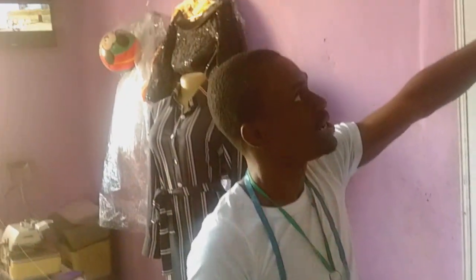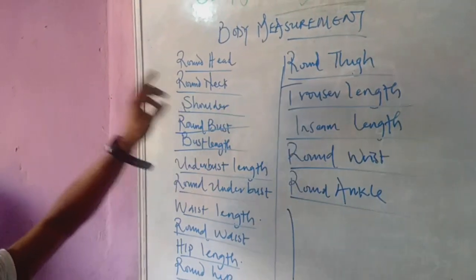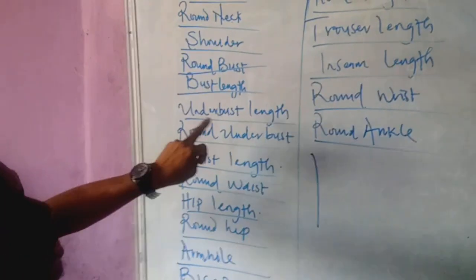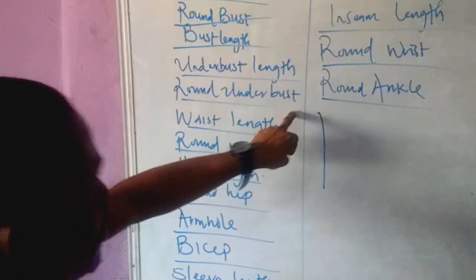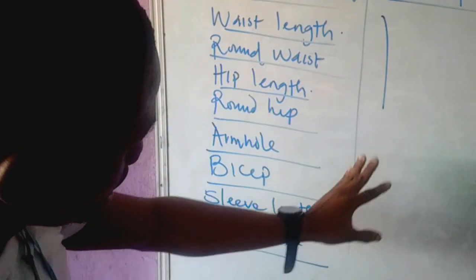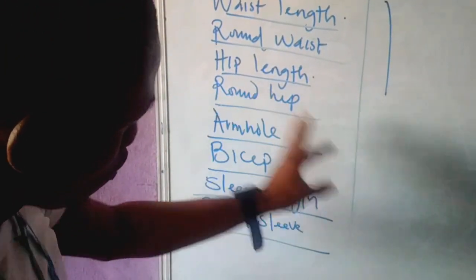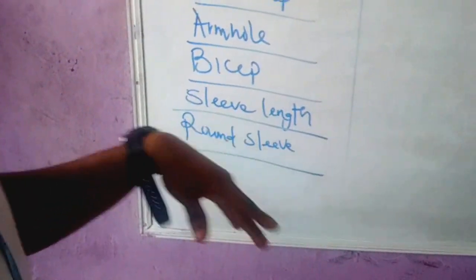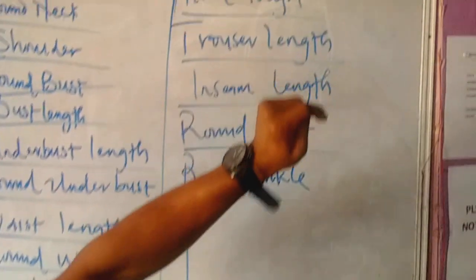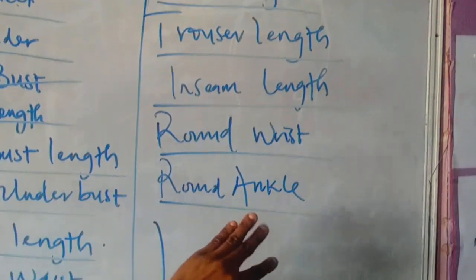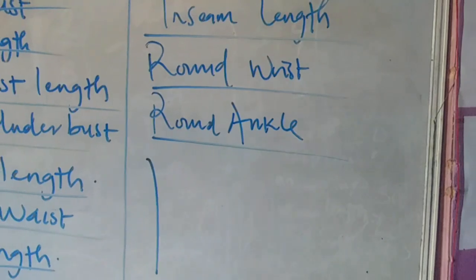We have: round head, round neck, shoulder, round bust, bust length, under bust length, round under bust, waist length, round waist, hip length, round hip, armhole, bicep, sleeve length, round sleeve, round thigh, trouser length, inseam length, round wrist, and round ankle.